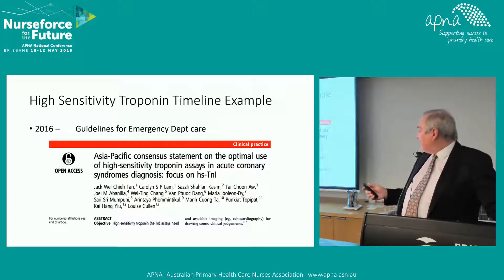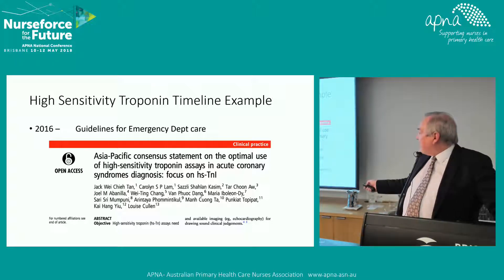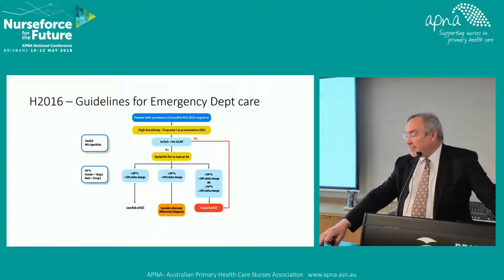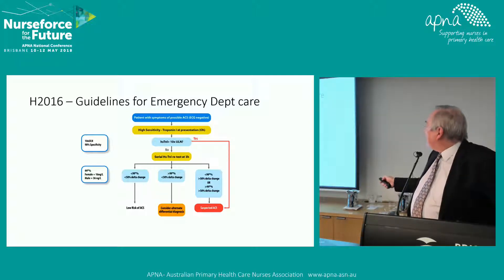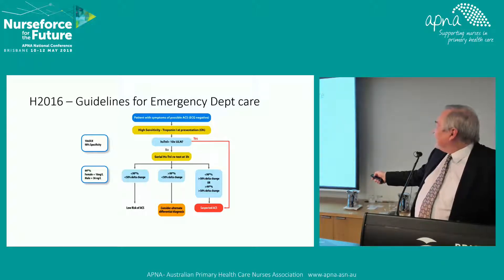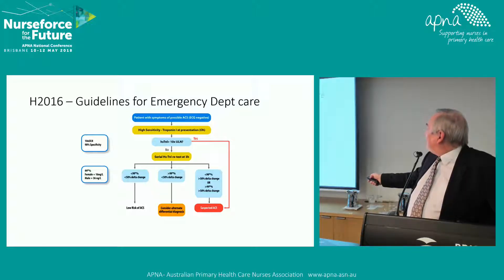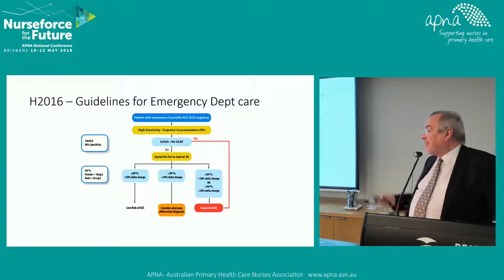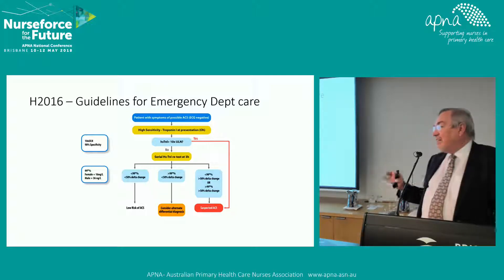Here is an example of a 2016 guideline by Louise Cullen from Royal Brisbane Hospital and colleagues from various Asian countries — a consensus statement on using troponin assays with a focus on high sensitivity troponin. They recommend using a delta change as part of the protocol: you do one result straight away, and if it's really high — ten times the upper limit of normal — that's immediately concerning. Otherwise you do serial measurements, with a retest at three hours, look at the delta, and proceed from there. That's broadly what Queensland Health emergency departments use.